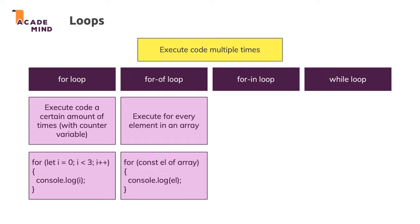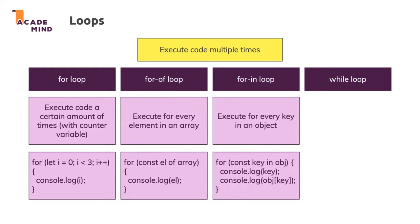Now, for-of helps you with arrays. We also have for-in, and that allows you to execute code for every key in an object. This is how it looks like. We basically have the same syntax as in a for-of loop but with the in keyword instead of the of keyword. And an important difference is that for-of is built to work with arrays, for-in is built to work with objects.